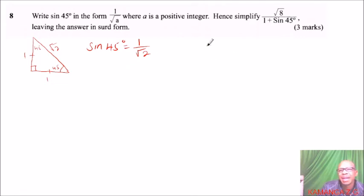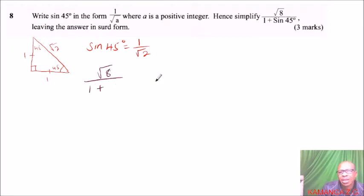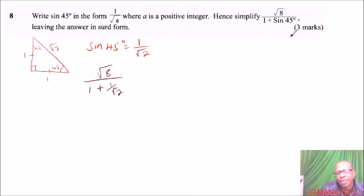This implies that we can write root 8 divided by 1 plus — now instead of writing sine of 45, we write 1 over root 2. So we have gotten rid of sine of 45 and managed to write it in surd form.